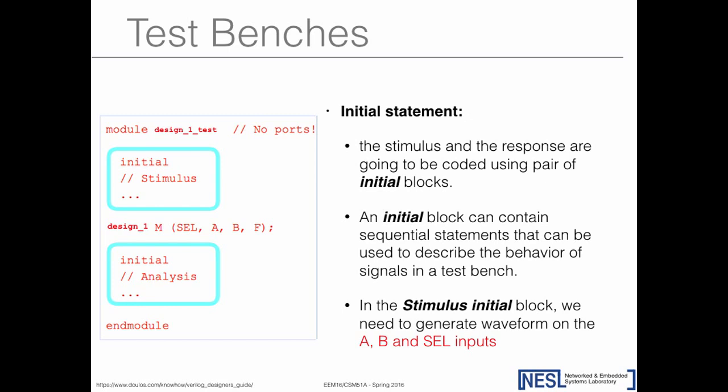The 'initial' keyword starts your simulation—it's the beginning. Inside the initial block, you have 'begin' and 'end', and between them you put the input patterns you want to test. You also create a module instance—for example, an instance M from a module called design_one with ports select, A, B, and F.